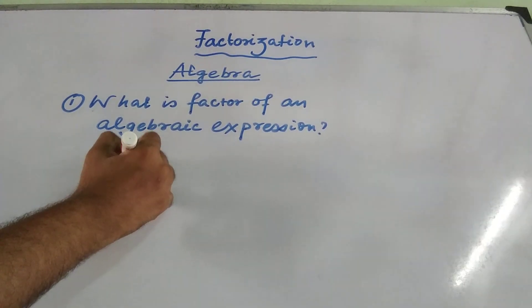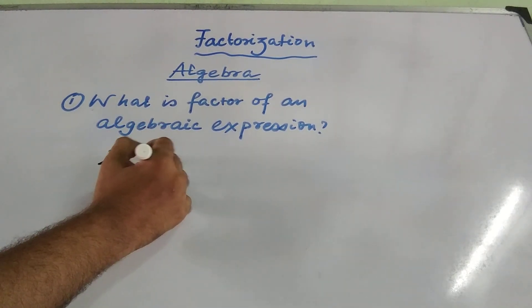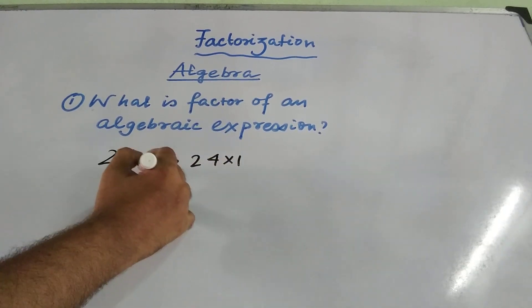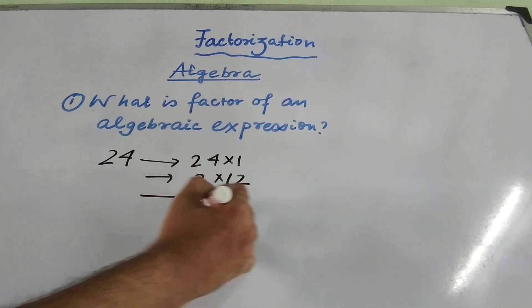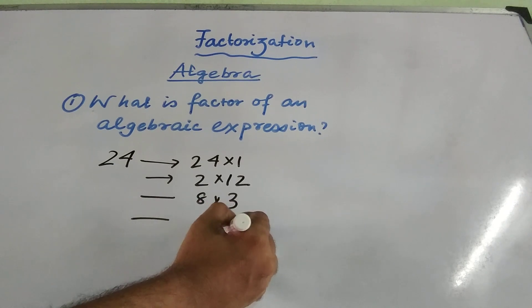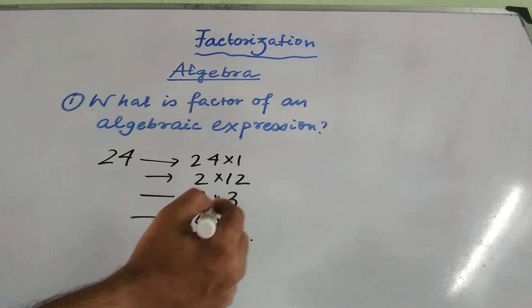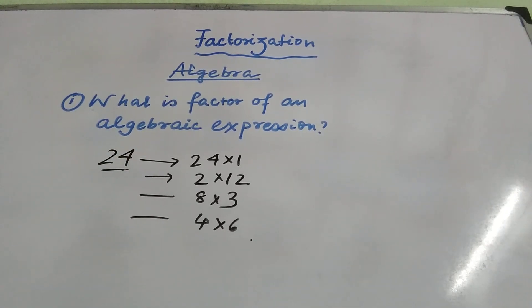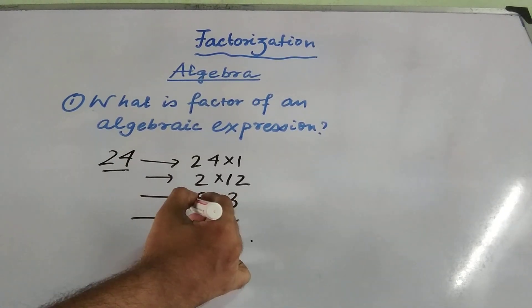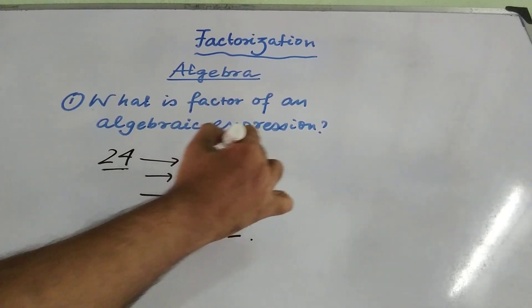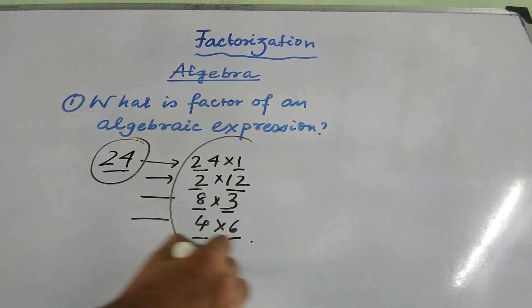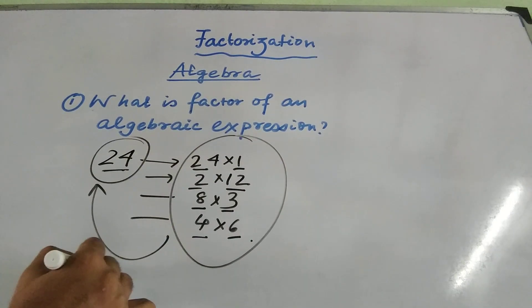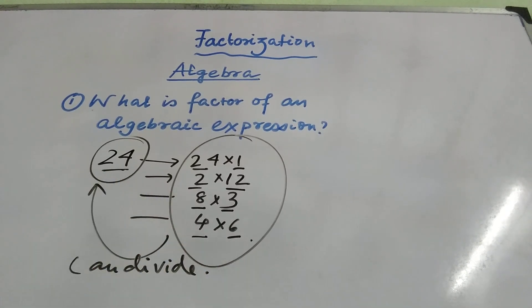Let us concentrate on the number 24. What are its factors? 24 can be written as 24 into 1, similarly as 2 into 12, as 8 into 3, and also as 4 into 6. So all the numbers which can divide 24 are the factors of 24 — that means 1, 2, 3, 4, 6, 8, 12, and 24. All these numbers can divide 24, so they are all factors of 24.